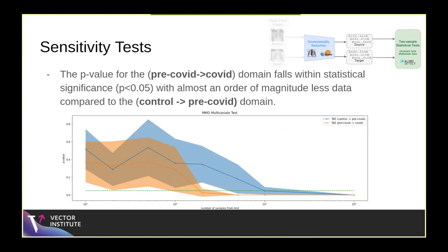One particularly important plot shows the p-value for the pre-COVID to COVID domain overlaid on a plot of control to pre-COVID — the blue line — with pre-COVID to COVID as the orange line, using the best test: the trained auto-encoder with MMD. The pre-COVID to COVID shift falls below the green dotted line — the threshold of statistical significance at p < 0.05 — with almost an order of magnitude less data than the control pre-COVID region. This shows a distinct shift due to COVID, as the detector is particularly more sensitive to target samples from that distribution.